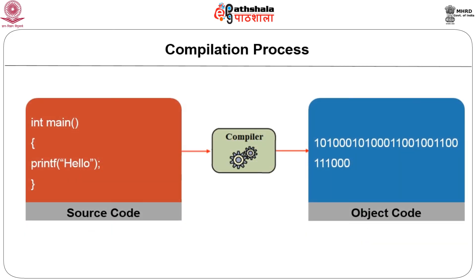For example, if I write a program for a simple arithmetic calculator with add, subtract, and multiplication operations, that program becomes the source code. Once the source code is compiled, we generate object code which can be executed on the system. If it is a scripting language, we interpret those programs.